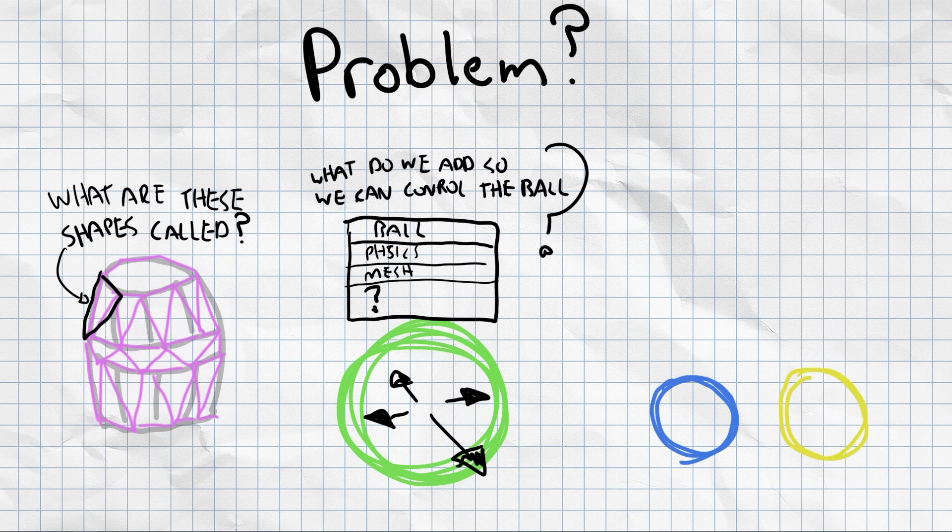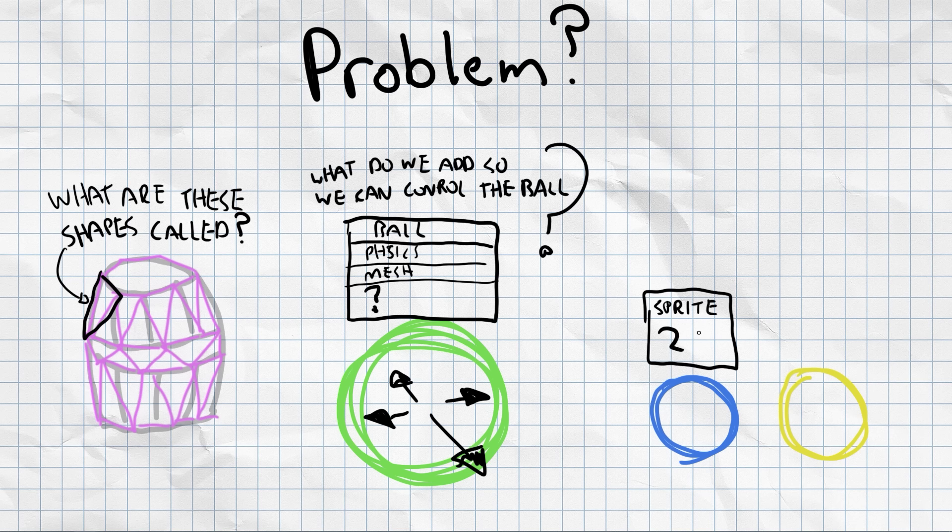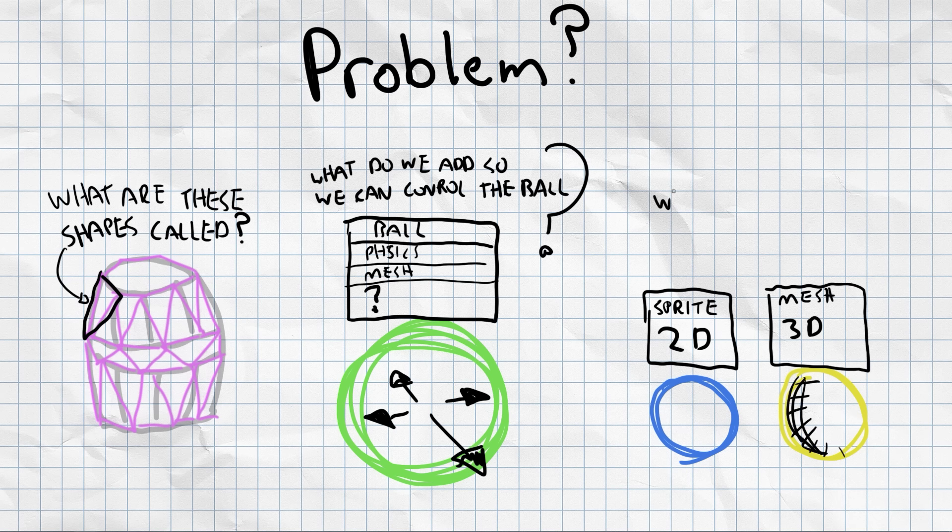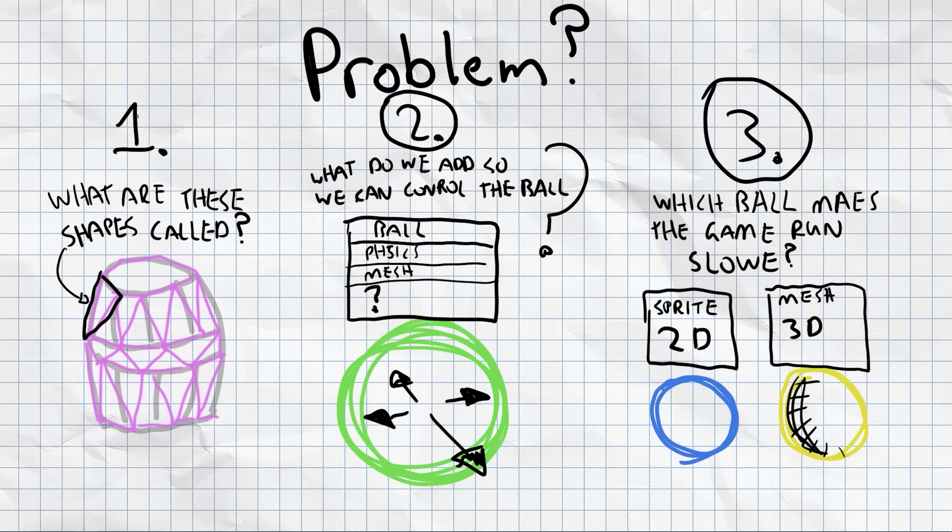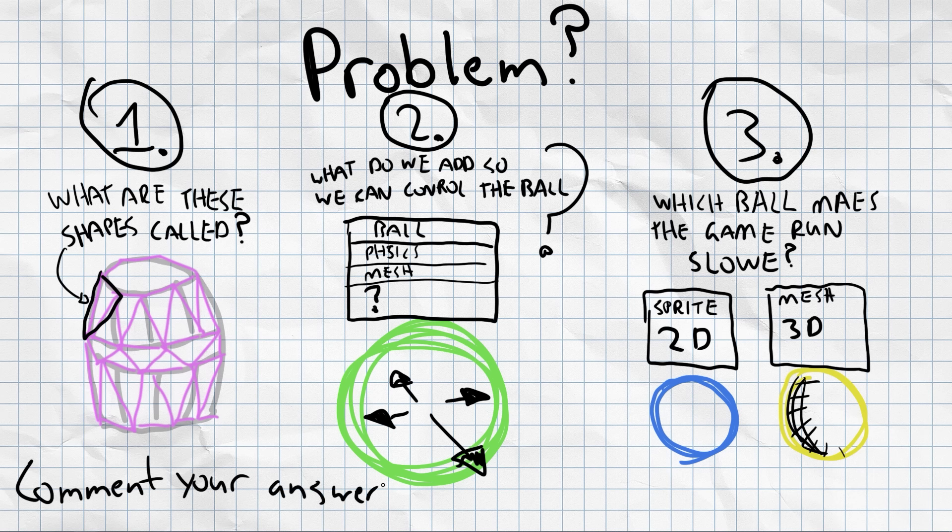So next I'm going to draw two balls, except one of the balls is actually a circle. So we have a 2D sprite on the left and then a 3D sphere or a mesh on the right. And what I want you to sort of answer for me is which ball inside a game engine is actually going to load the slowest, a 2D or a 3D. So make sure to write your answer in the comment section of the video and I'll leave a hidden answer section myself in the comments if you want to double check and see if you're right or not.